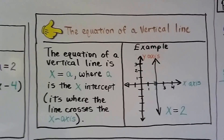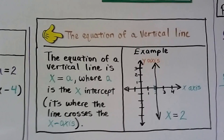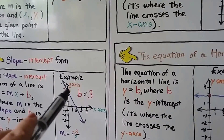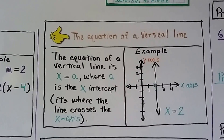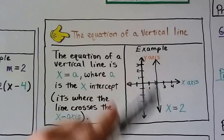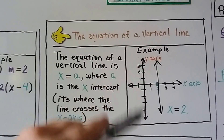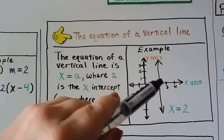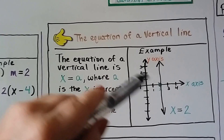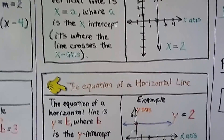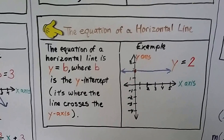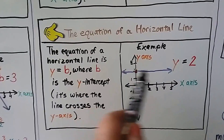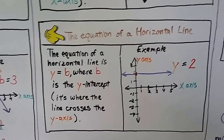For the equation of a vertical line, it's x equals a, where a is the x-intercept — it's where the line crosses the x-axis. For a vertical line, all the x values stay the same while the y values change. So you might have x is 2, y is 3; x is 2, y is 4; x is 2, y is 5 — x stays the same as y goes positive or negative. The equation of a horizontal line is y equals b, where b is the y-intercept. For a horizontal line, all the y values stay the same as the x values change.